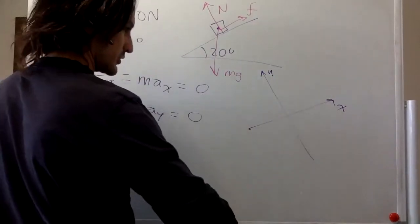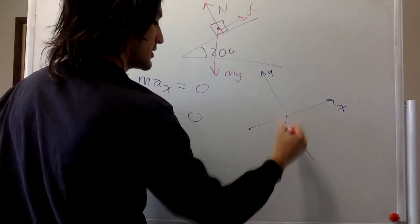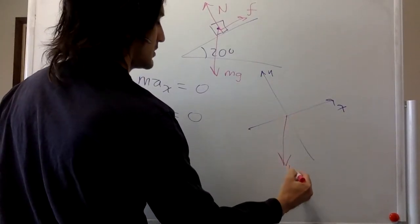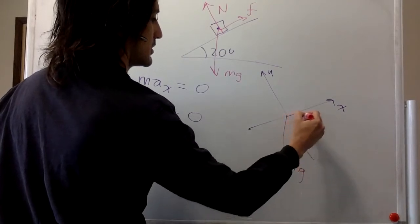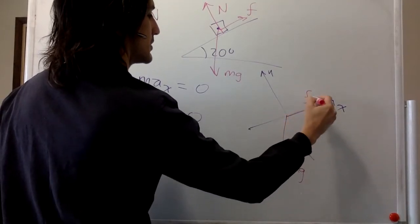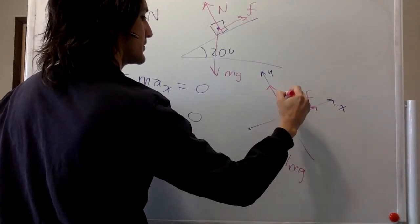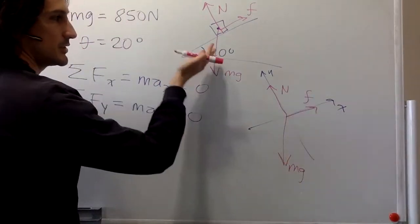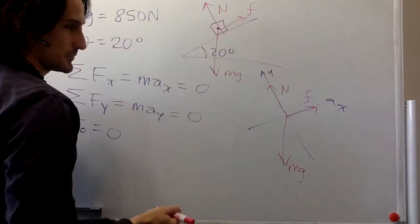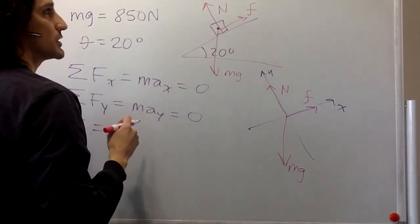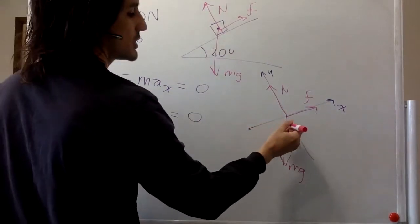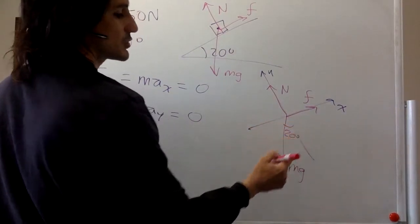So the free body diagram looks kind of like this. This angle over here, if you look at all the triangles like we did in the last problem, this angle is going to be 20 degrees.